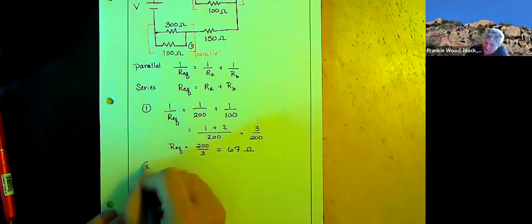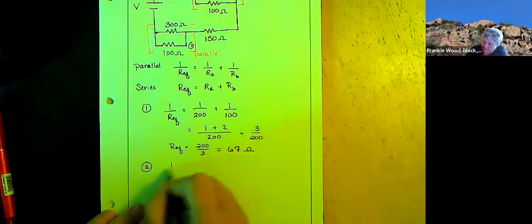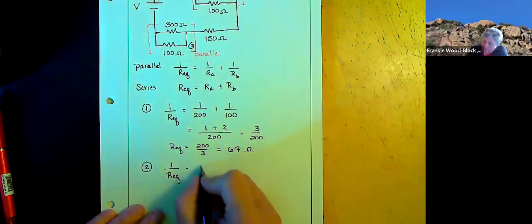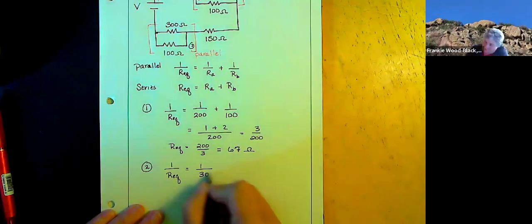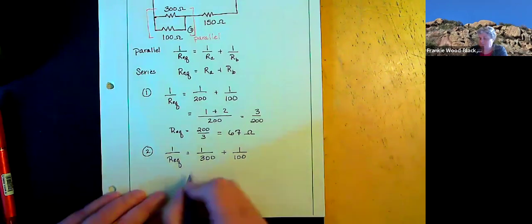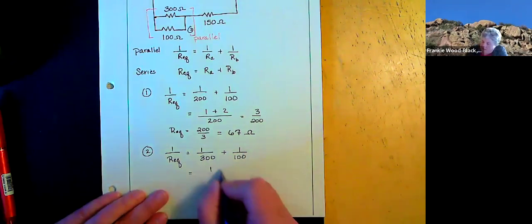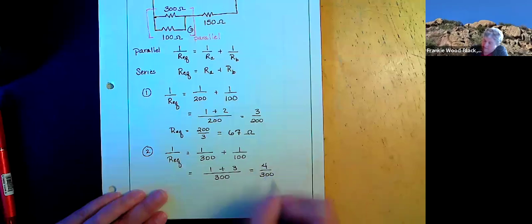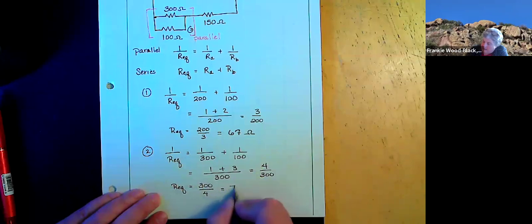So now we're going to do number two. One over REQ is equal to one over 300 plus one over 100. That's going to give me one plus three divided by 300, which gives me four divided by 300. REQ is going to equal 300 divided by four, and that equals 75 ohms.